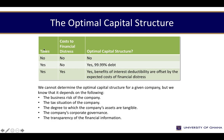In summary: where there are no taxes and no costs to financial distress, there is no optimal capital structure. Where there are taxes but no financial distress costs, use as much debt as you can. But where there are taxes and the possibility of financial distress costs, the benefits of interest deductibility are offset by the expected cost of financial distress — the optimal capital structure is the point where it gives you the best return. We cannot determine the optimal capital structure for any given company precisely, but it depends on: the business risk of the company, the tax situation, the degree to which the company's assets are tangible, corporate governance, and the transparency of financial information.